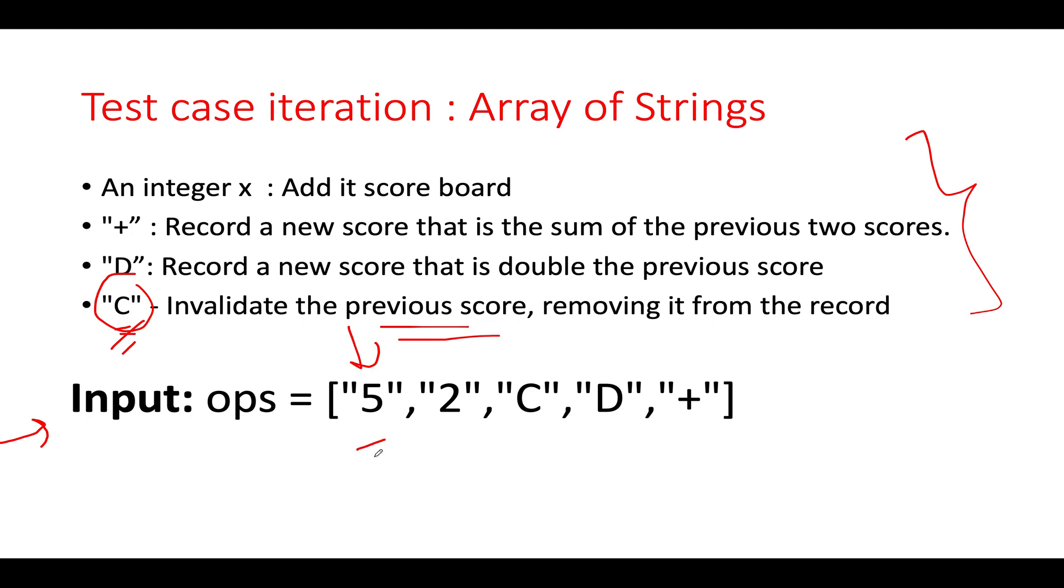So let's get started. The first element that we see is five and let's create an empty stack. Since the stack is empty and the current element that we see happens to be an integer, you simply add it to your stack. The next is two. So you again add it to your stack. The next is C.